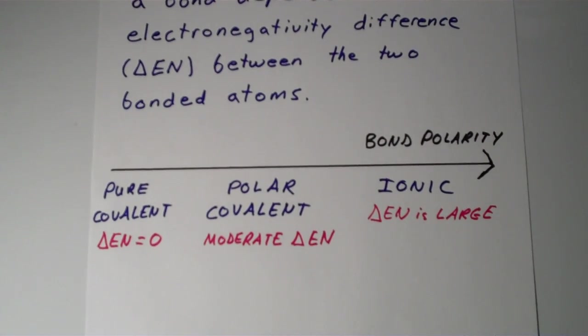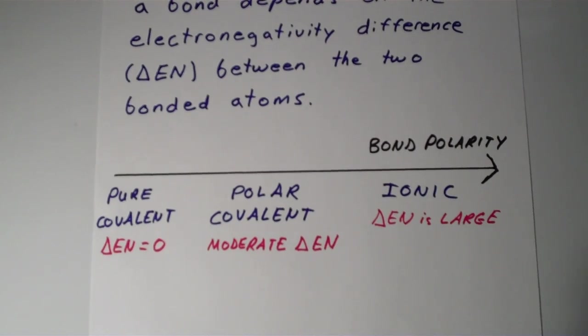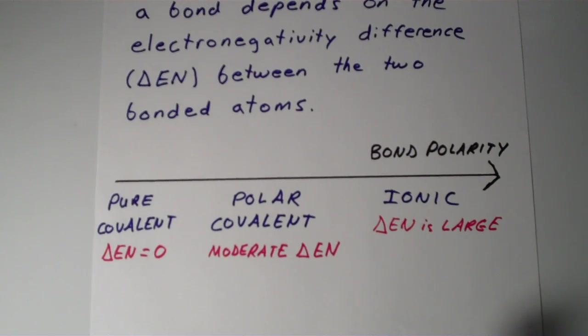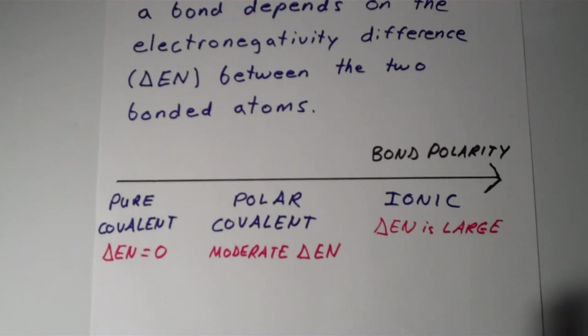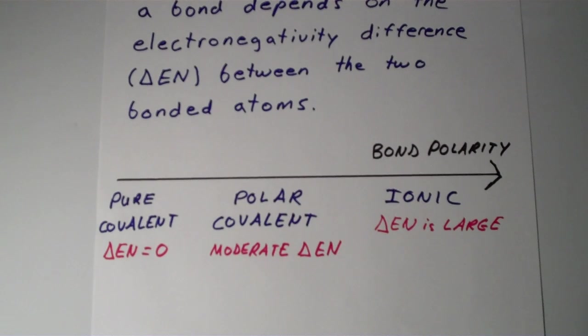In a later video, I'm going to show how you can quantify the extent of bond polarity. In this here, we just classified it into three broad groups. But in the next video, I'm going to show how we actually quantify the extent of bond polarity in a chemical bond or in an entire molecule. Alright, have a good one.